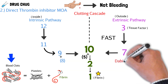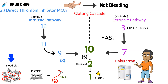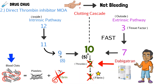So where does dabigatran actually work? Clotting factor 2 is also known as thrombin, and earlier we said these drugs are direct thrombin inhibitors. When a patient takes dabigatran, it blocks clotting factor 2 — also known as thrombin — which eventually leads to blocking fibrin production. If we block fibrin, we block blood clot formation. That's exactly how this drug works.